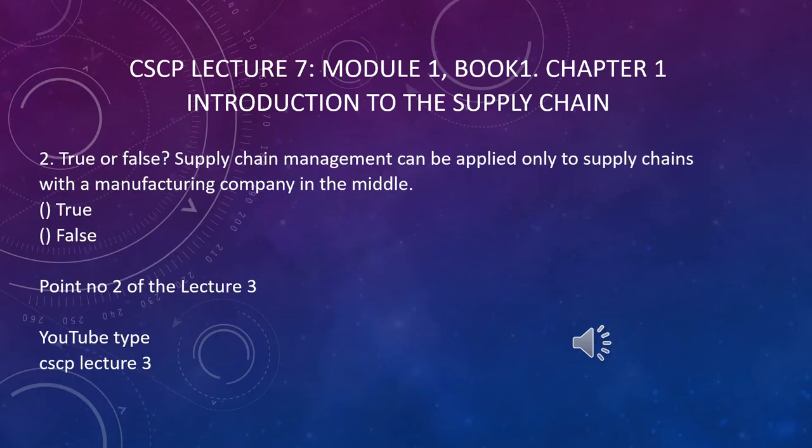Question number two is true or false: supply chain management can be applied only to the supply chain within a manufacturing company in the middle. Think about the answer. The answer is false. You can check this from YouTube CSCP lecture 3, because the activities of a supply chain should be beyond the limit of the nucleus firm.